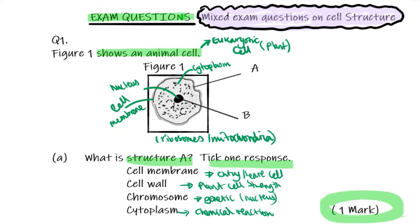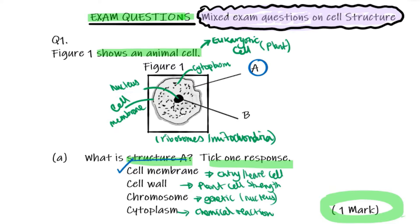Back to the question: we want to know what structure A is. Looking at structure A, it is pointing to the cell membrane. Next: what is structure B? Tick one response. Let's do a quick recap on these words again.